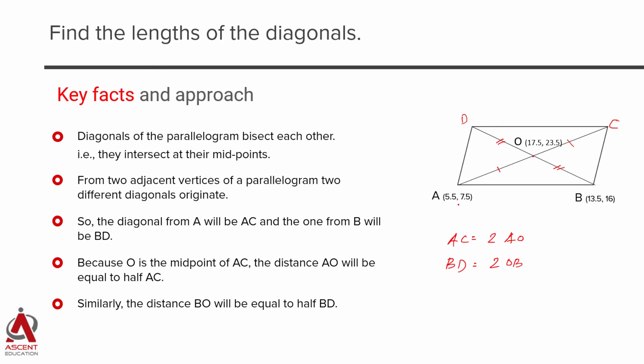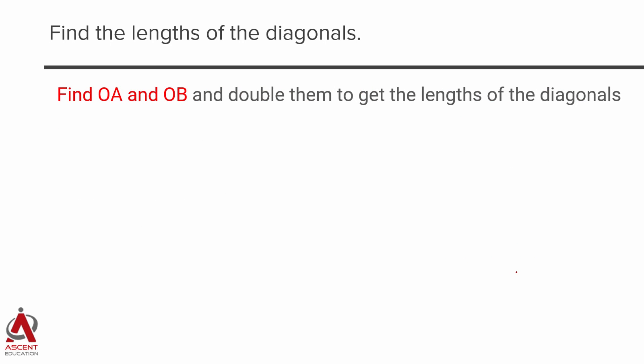Because I know the coordinates of A and O, I will be able to find out AO. Similarly, I know the coordinates of O and B, so I will be able to find out OB. So with these two, they will be able to find out the value of AC and BD. So what we are going to do? We are going to compute OA, OB, double them to get the answer.